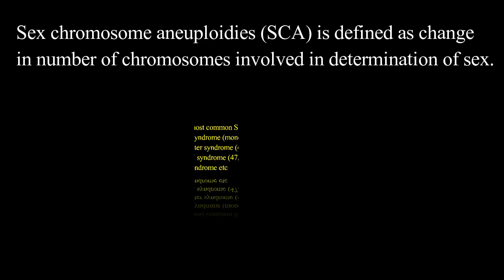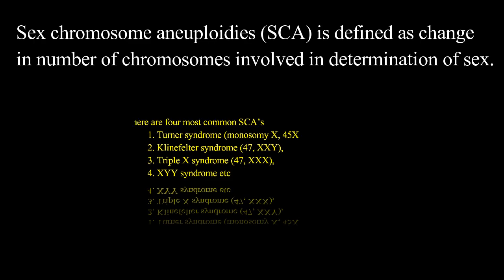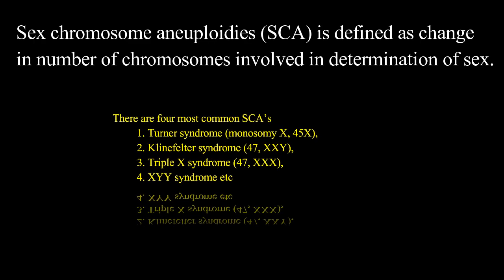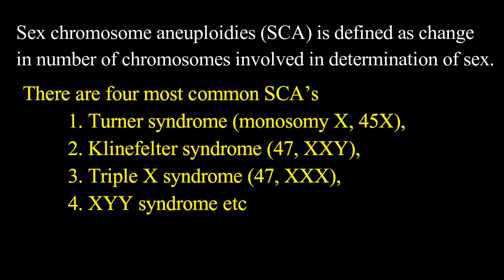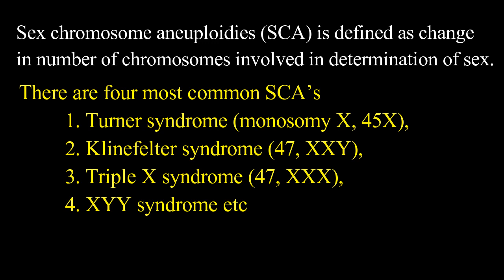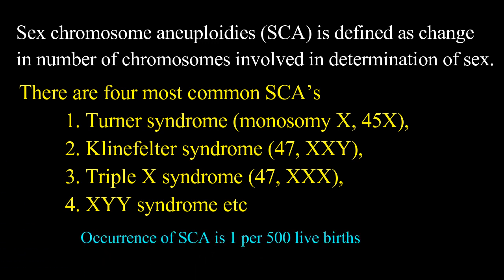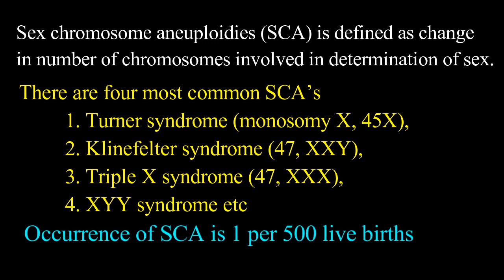There are four most common sex chromosome aneuploidies: Turner syndrome, Klinefelter syndrome, XXX syndrome, and XYY syndrome. The occurrence of sex chromosome aneuploidy is 1 per 500 live births, but they are under-diagnosed and the genetic mechanism behind them is poorly understood.